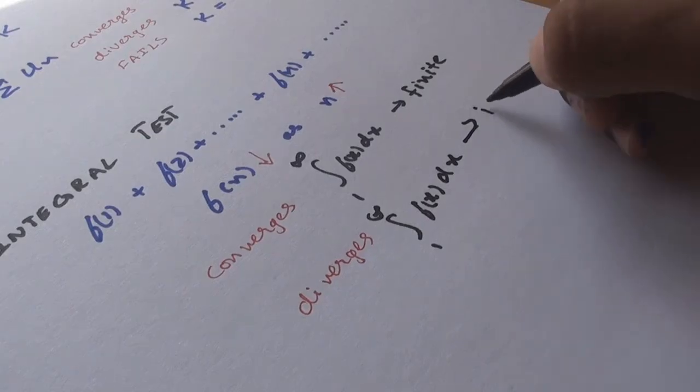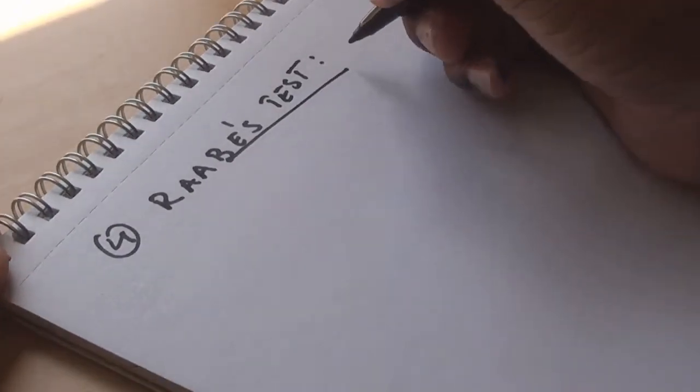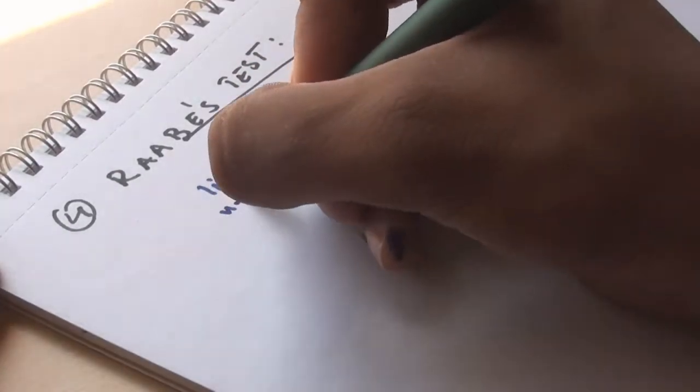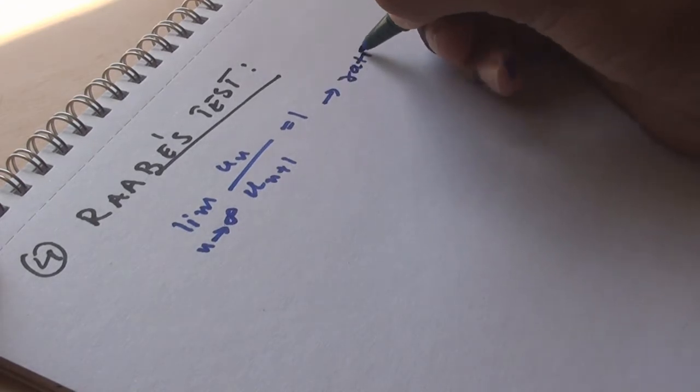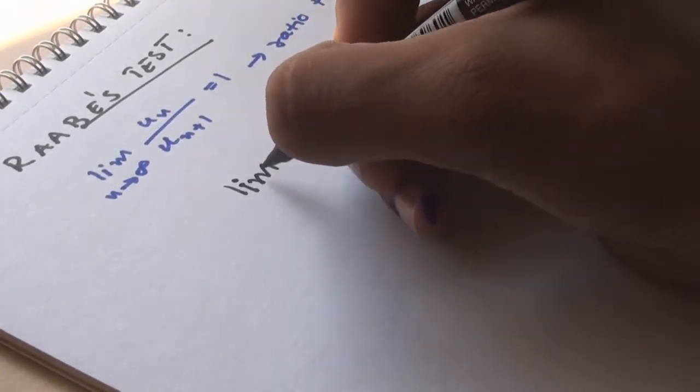Raabe's test. We have seen that the ratio test fails when lim(un/un+1) as n→∞ equals 1. So, we move on to apply Raabe's test on the series to test its convergence.